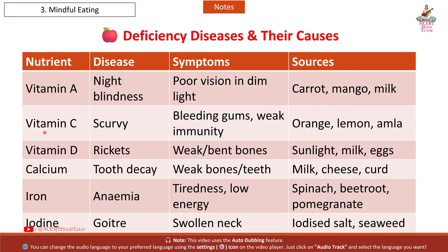Next nutrient: Vitamin C. Disease: Scurvy. Symptoms: bleeding gums, weak immunity. Sources: orange, lemon, amla.